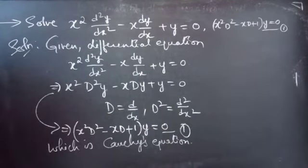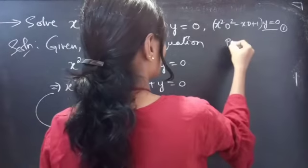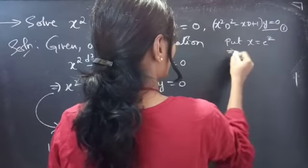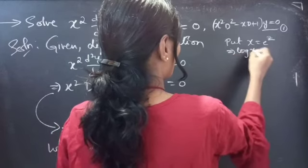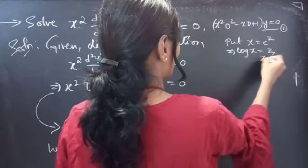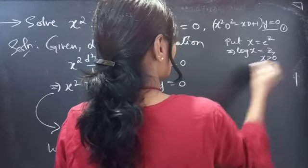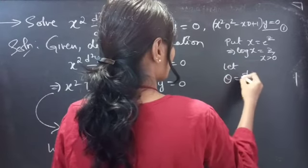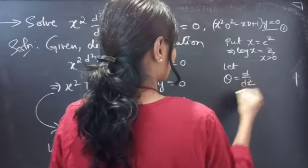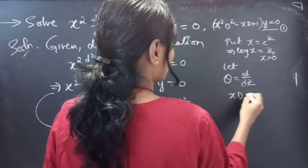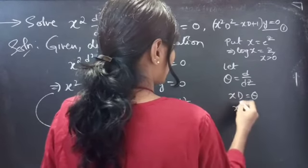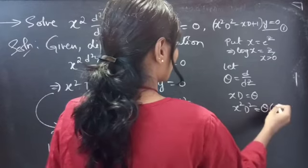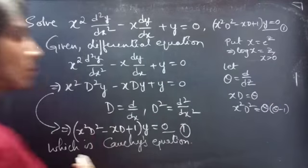Now, put x equals to e^z, then log x equals to z for x greater than 0, and let theta (θ) equal to d/dz. Then xD will be equal to θ, and x²D² is equal to θ(θ minus 1).